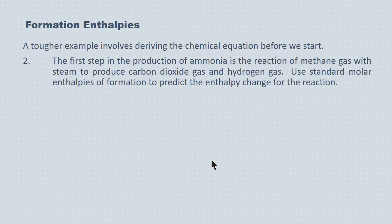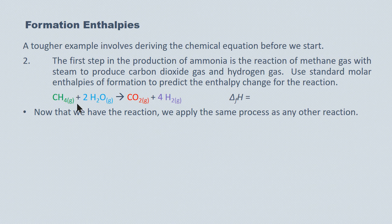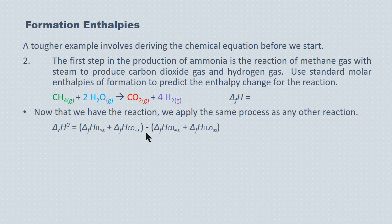Here's a tougher example because we're not even given an equation — just a description. We're talking about the reaction of methane gas with steam to produce carbon dioxide and hydrogen. Going straight to the balanced equation: methane and steam are the reactants, carbon dioxide and hydrogen gas are the products. The products are being formed so we add their enthalpies, and the reactants are being decomposed so we subtract their enthalpies.